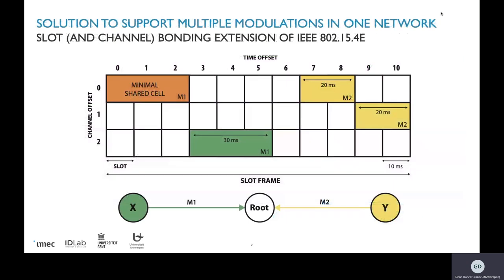This is exactly what we introduce and propose in this paper: the concept of slot bonding and channel bonding. With slot bonding, for node X to the root we bond 3 slots together to use modulation M1 giving 30 ms bonded slots, while for node Y we bond 2 slots together to get 20 ms slots for modulation M2. We also introduce channel bonding, where if the modulation needs 400 kHz but the normal channel bandwidth is 200 kHz, you bond multiple channels together. In this paper we primarily focus on slot bonding and its analysis.